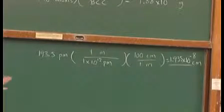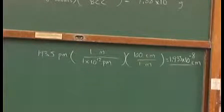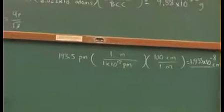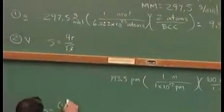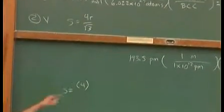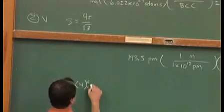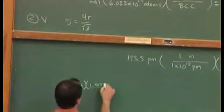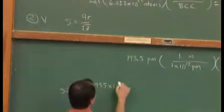Now let's plug it into this formula for the side. The side is equal to the number 4 times our new radius which is 1.935 times 10 to the negative 8th centimeters divided by the square root of 3